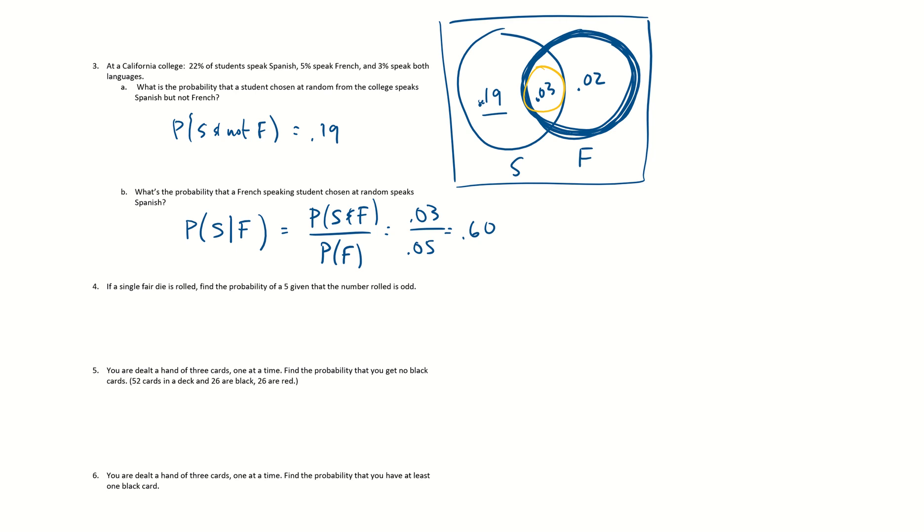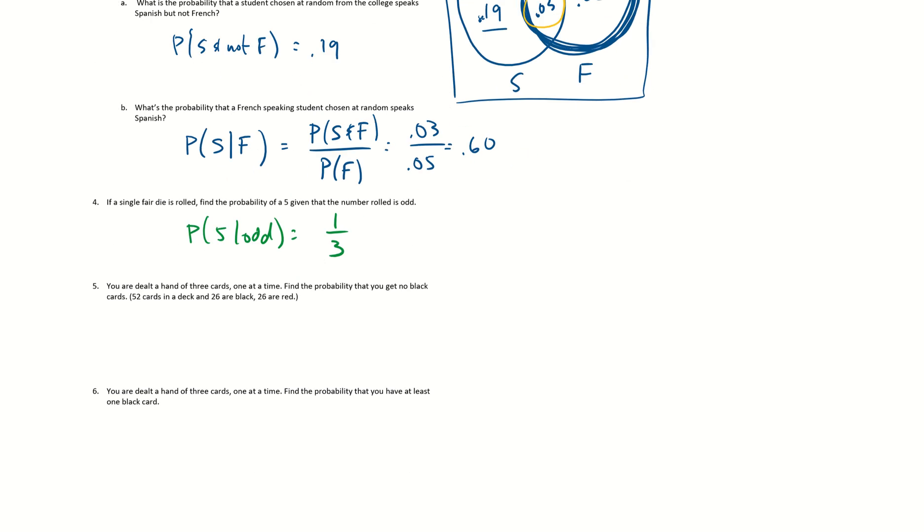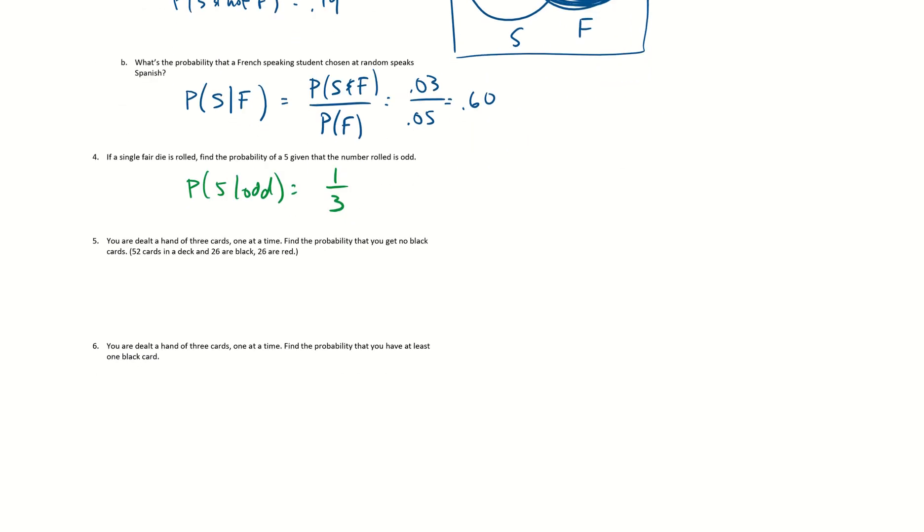Okay, if a single fair die is rolled, probability of 5 given there was odd. We did that one on the review. Probability of 5 given odd is 1 out of 3 because there's 3 odd ones. Deal three cards, one at a time, probably you get no black cards. So probably red and red and red. 26 over 52, 25 over 51 because we don't replace them, 24 over 50. If you do that, you get 0.118.